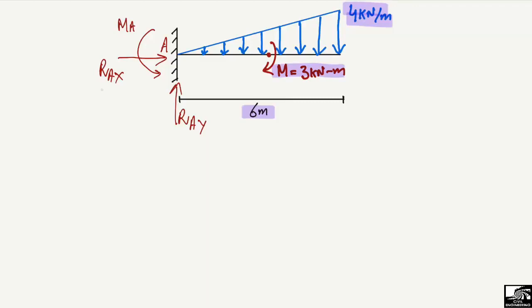To find the support reactions, we can directly say that the horizontal component RAX will be equal to zero, because there is no horizontal load acting on this cantilever beam. So we need to find out the vertical reaction RAY and the moment at A.